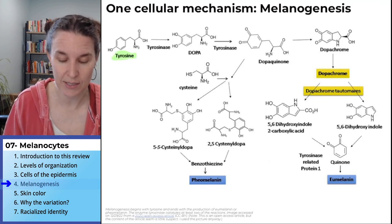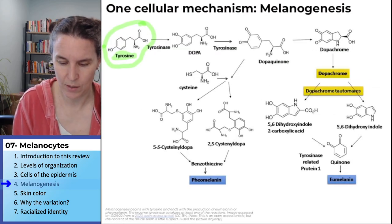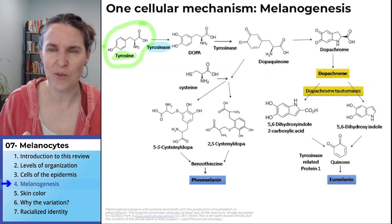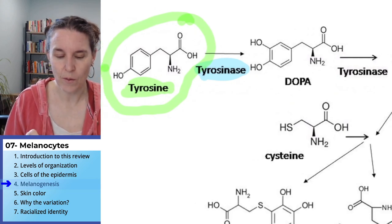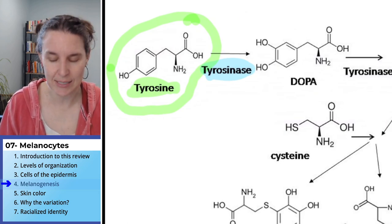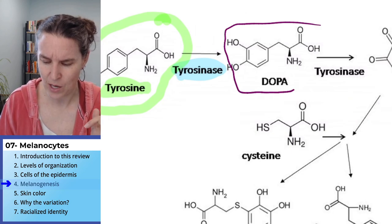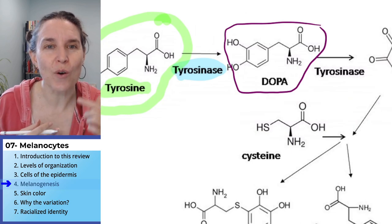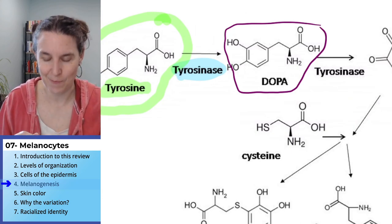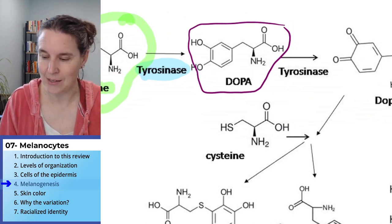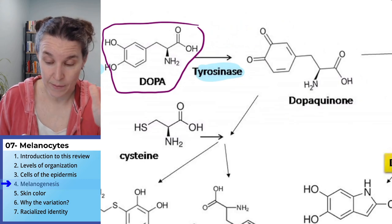We start out with tyrosine — and this is what tyrosine looks like. Tyrosinase is shown here in blue. We start with tyrosine, tyrosinase does some magic, and now we have DOPA. Tyrosinase is back at it again, and it turns the DOPA into dopaquinone. I'm showing you this to demonstrate that there is a series of intermediate steps in this process of melanogenesis that you could know and memorize — but we're not going to.